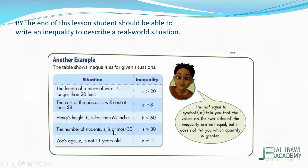The number of students S is at most 30. At most 30 means it can't exceed 30 — it can be 30 or less, but it can't be more than 30. So we write S is less than or equal to 30.